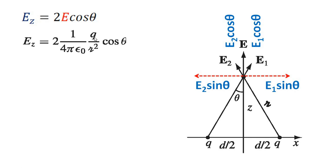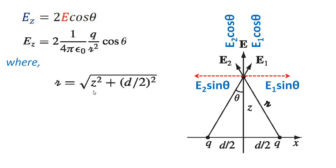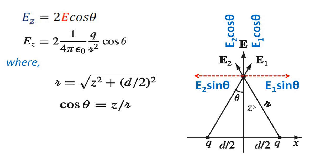The value of E2 is (1/4πε₀)·q/r². We substitute this here. The r value comes from the triangle geometry: r² = z² + (d/2)². So r = √(z² + (d/2)²). Also, cos theta equals the adjacent side z divided by the hypotenuse r, that is, cos theta = z/r.